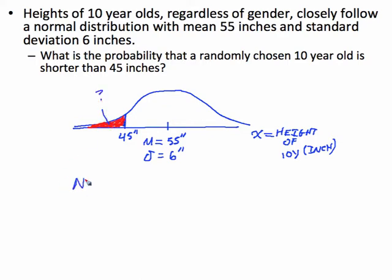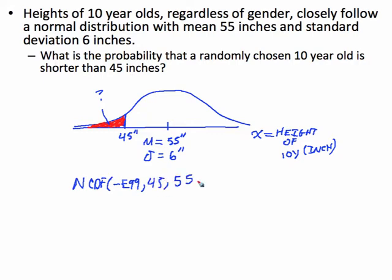So that means we're going to use normalCDF. If we're looking for a proportion or probability, we use normalCDF. We're going to go from negative E99 to 45, with mean 55 and standard deviation 6.